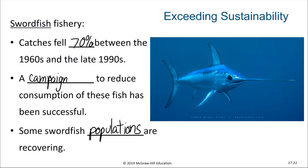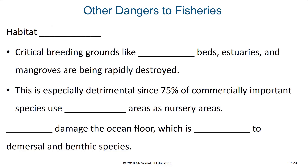Other dangers to fisheries include not just the depleting stocks of fish, but also habitat destruction — especially if this habitat destruction happens at critical breeding grounds like seagrass beds.